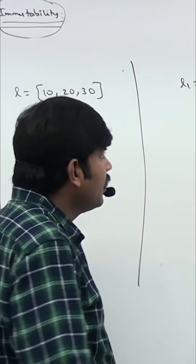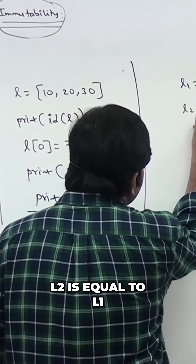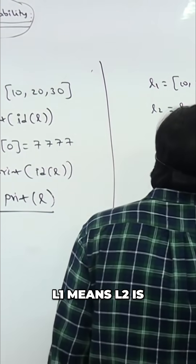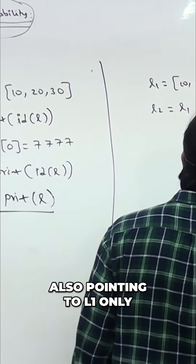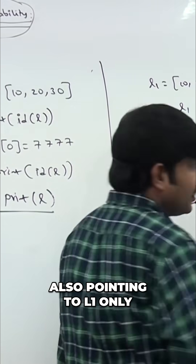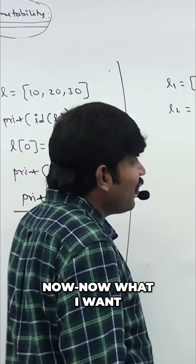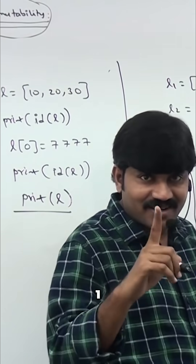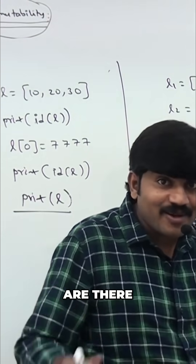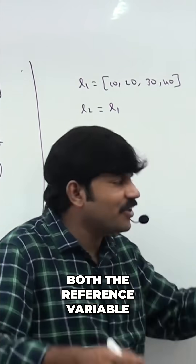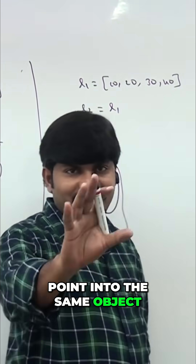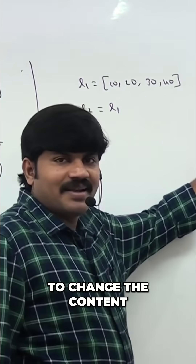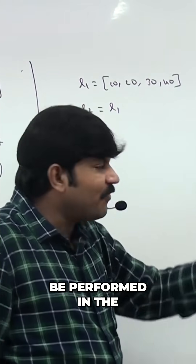l2 is equal to l1 — that means l2 is also pointing to l1 only. Now, how many list objects are there? One. But how many references are there? Both reference variables point into the same object.